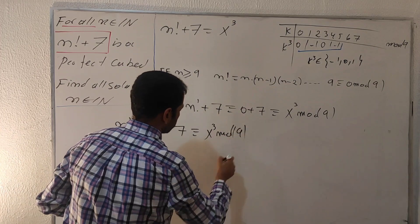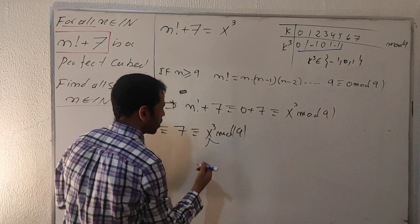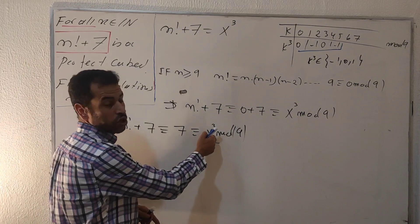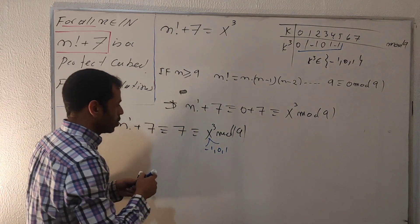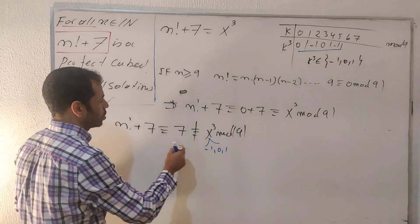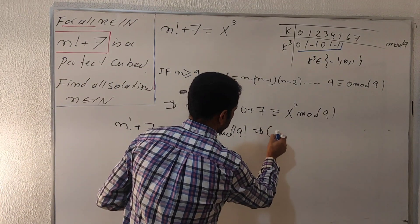But the reminder of x cubed is minus one, zero, or one. So they have different reminders, which means this one is impossible.